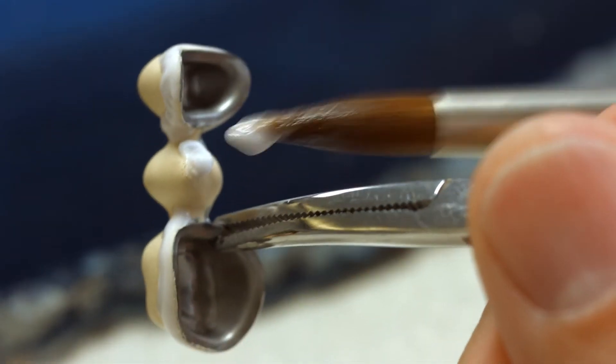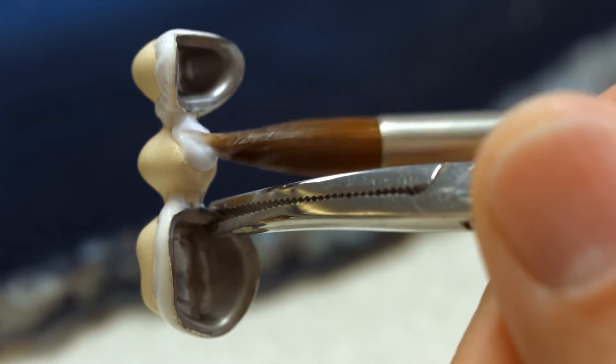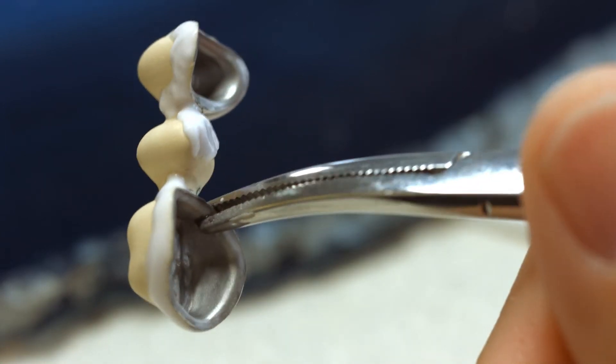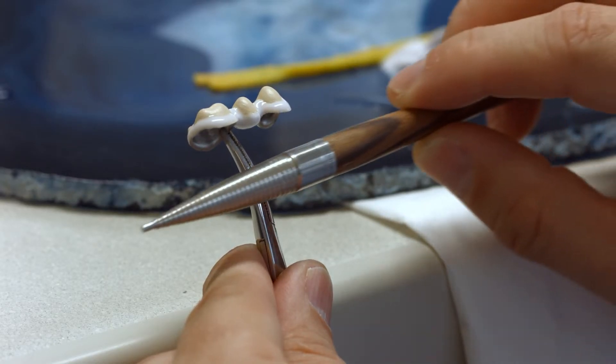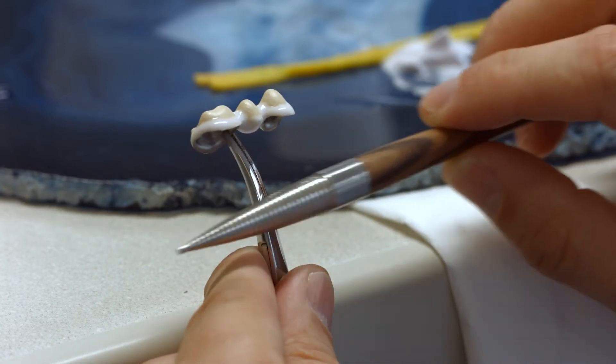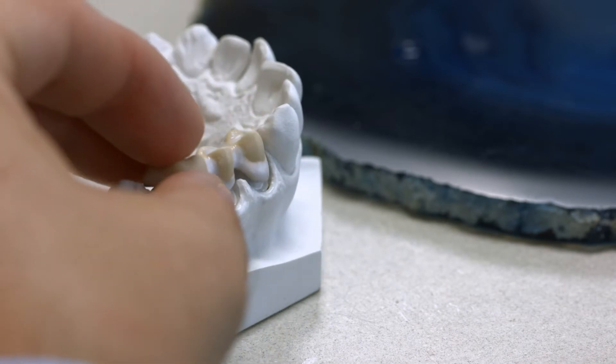Line the basal pontic area with the one-layer IPS Style Ceram-1 material. Place the framework on the model.